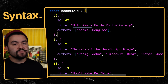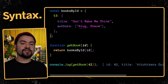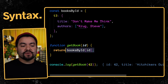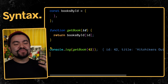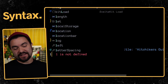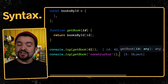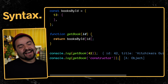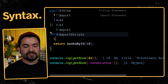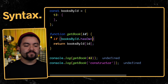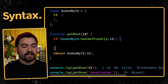Let's say you have a books-by-ID object where all the keys are the ID of the books, and all the values are the books themselves. You might have a get-book function that accepts the ID and returns that book at that specific ID. This will mostly work, but what you might not have considered is there are certain things on the object because it inherits from the object prototype. If you get the string 'constructor', that's going to return the object constructor, and we don't want that.